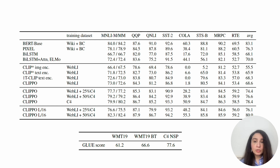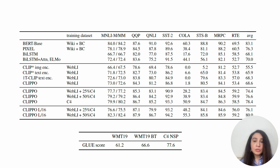The bottom table shows results investigating the effect of different contrastive text-text co-training objectives. The authors consider next-sentence prediction from C4, as well as parallel translated pairs from different languages and English back-translated pairs from the WMT19 dataset. This table shows the best objective is next-sentence prediction.